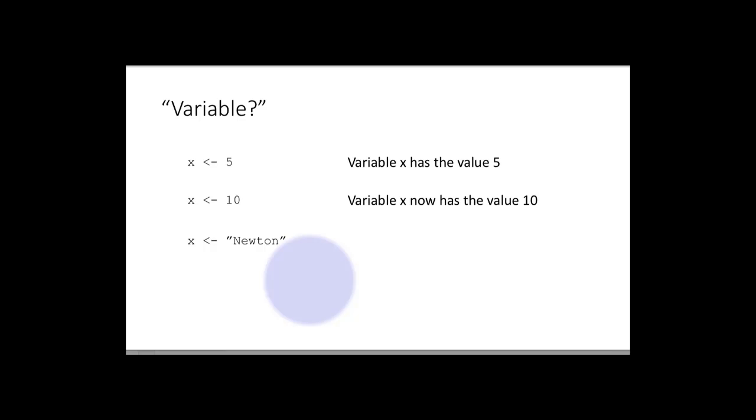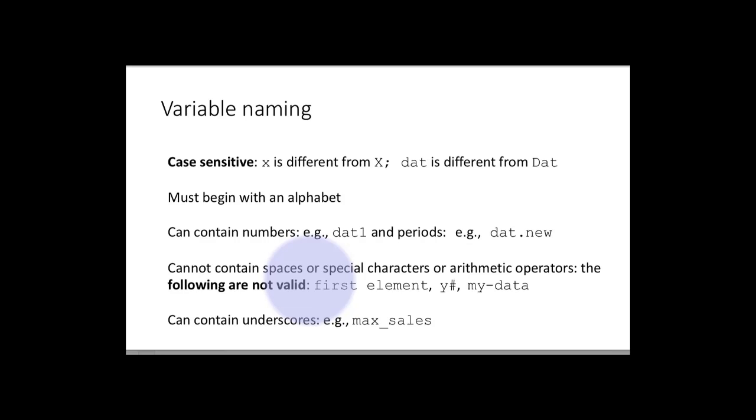You can put any value into variable. So you might put a number at one point and then you may go and put a character at some other point. And later on, you may put a data frame into the same variable. It doesn't matter. All of that is allowed. It's called variable because its value can vary or change over time.